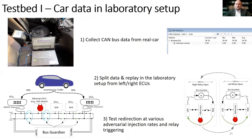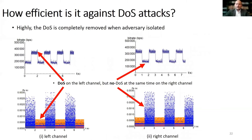To prove functionality, we use two testbeds. The first uses traffic collected from a real vehicle. We port this traffic into our laboratory testbed, split it, and replay it at the two bus ends, attempting to isolate the Type 3 adversary in the middle of the bus. The solution proves highly effective. When the adversary is causing a DoS, the bus load increases to 400 kbps on either the left or the right side, but not on both sides simultaneously. During the DoS, only a few legitimate frames denoted as blue dots enter the channel, while high-priority adversarial frames denoted as orange dots are more prevalent. The left and right channels are asynchronous as the adversary is switched from one side to the other.